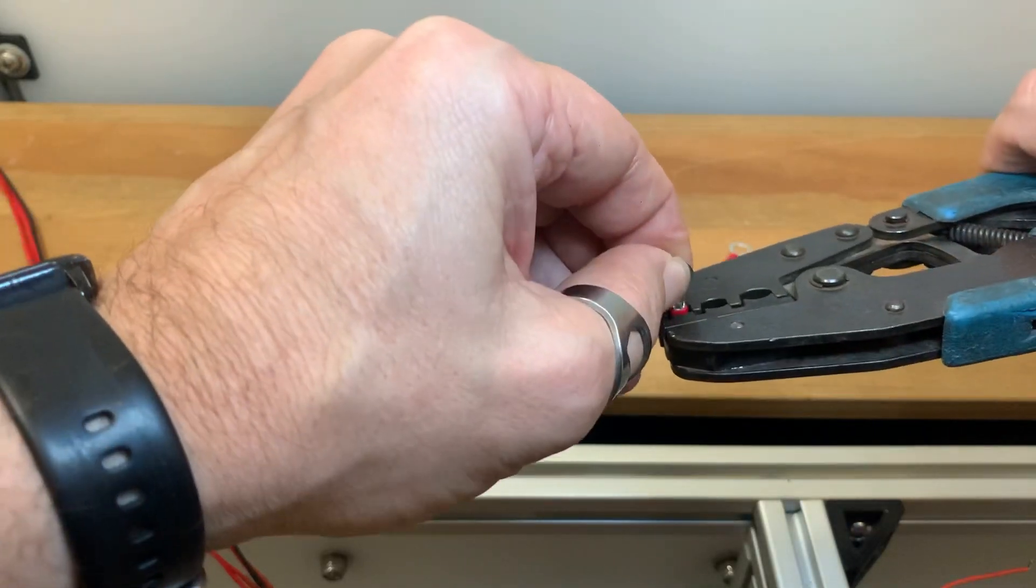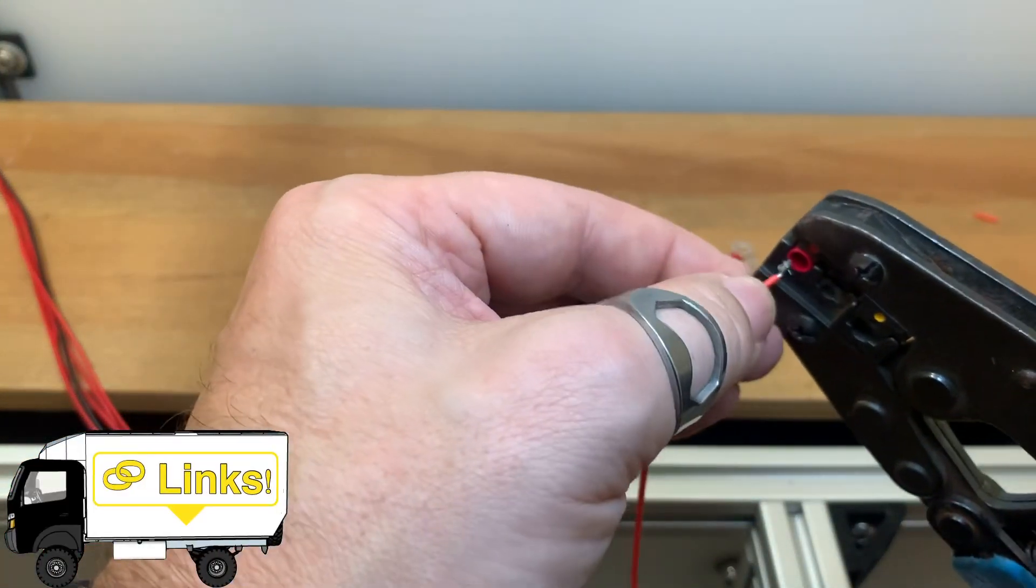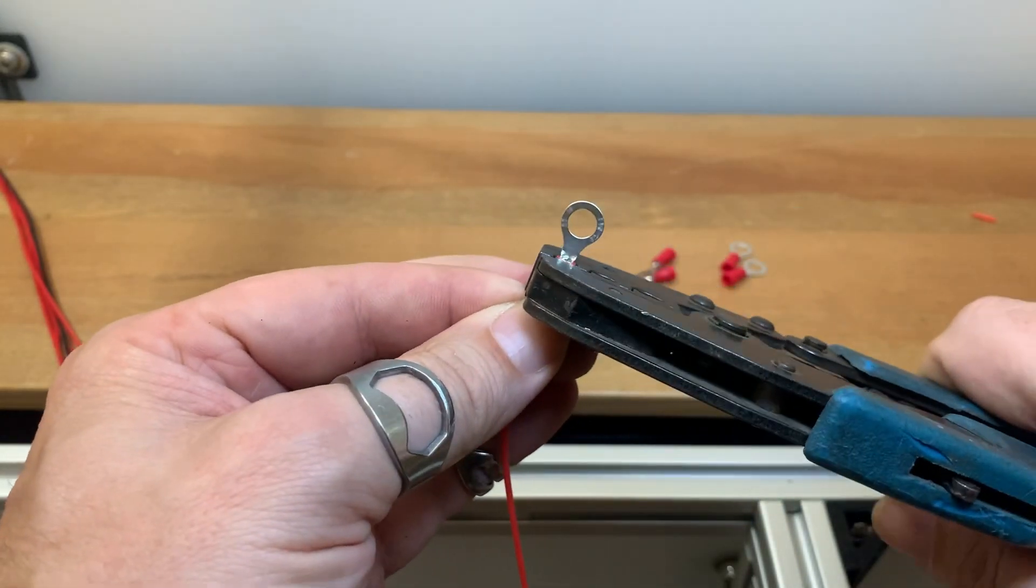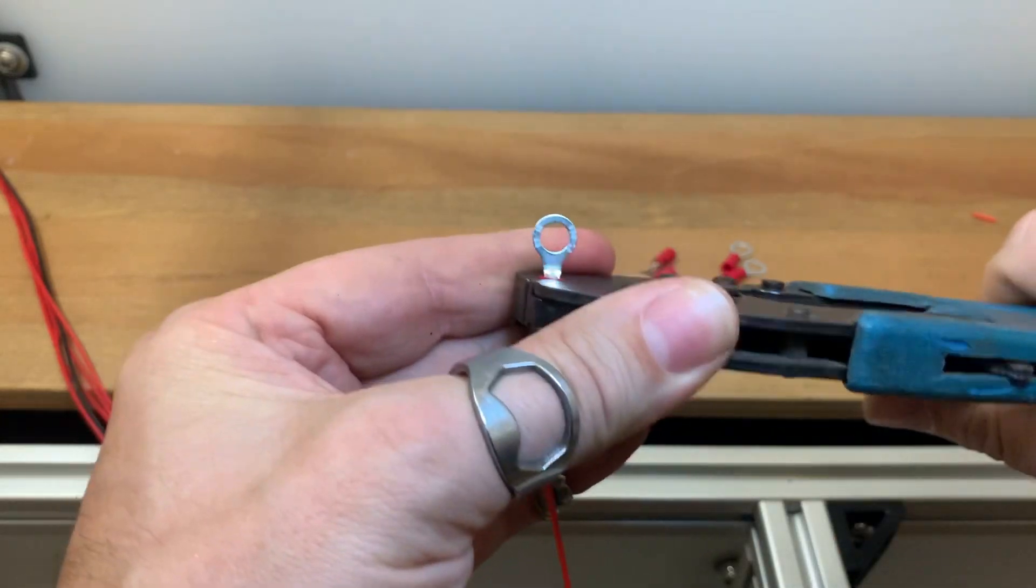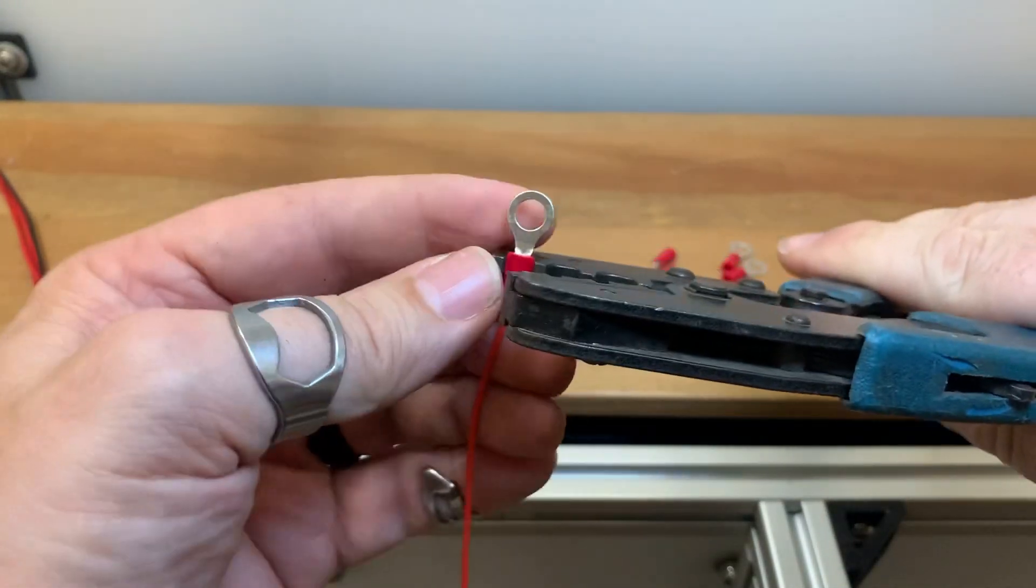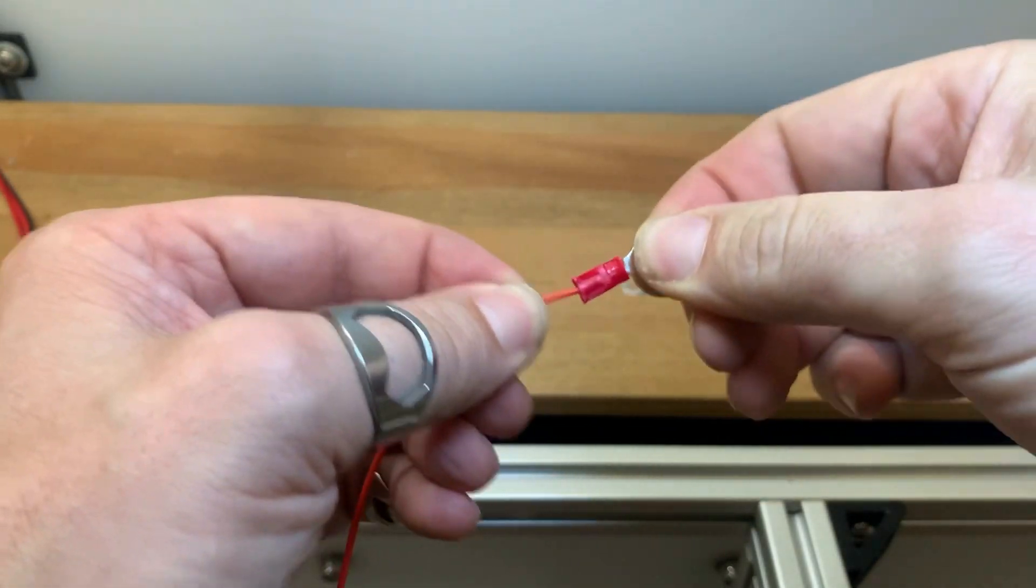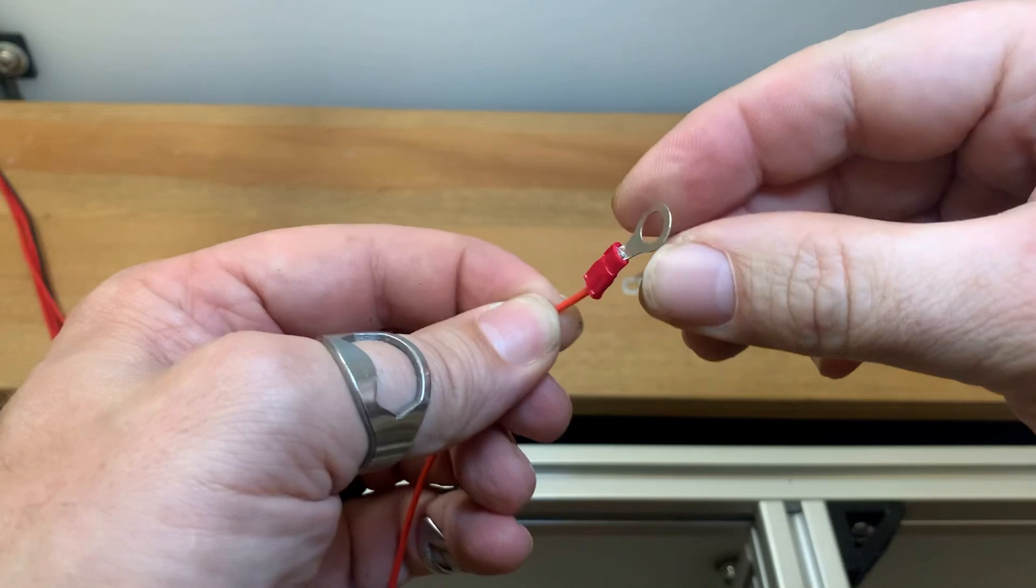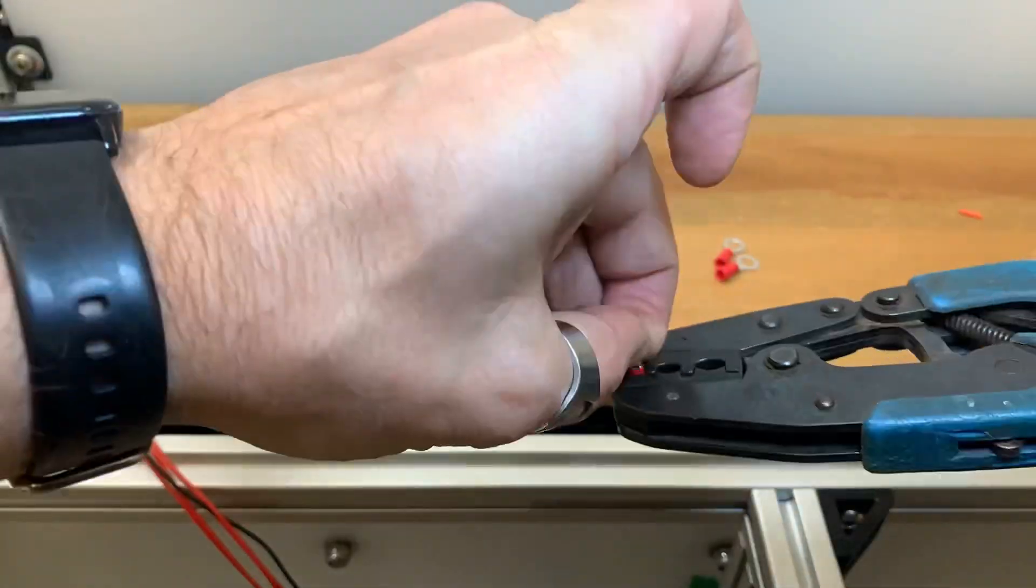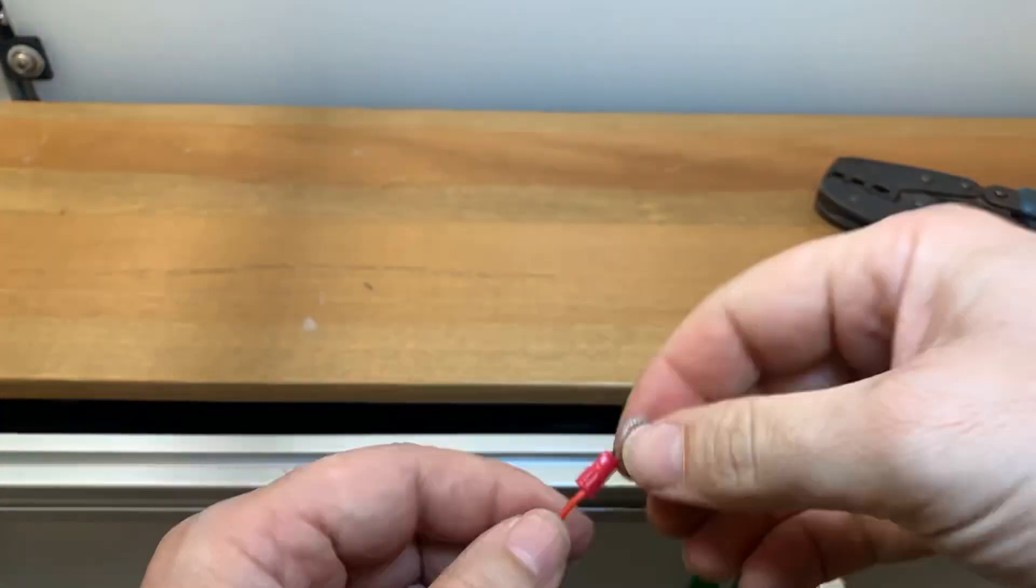I highly recommend only using ratcheting style crimpers versus the cheap stamp type. Ratcheting crimpers only release after a full compression cycle so you don't have under crimped connections which can pull apart or add resistance to your circuit. After your crimp is complete, always pull test your crimps every single time. I've had these crimpers for over 20 years and I bought them used. They've seen a lot of use even in a commercial application and they're still going strong.